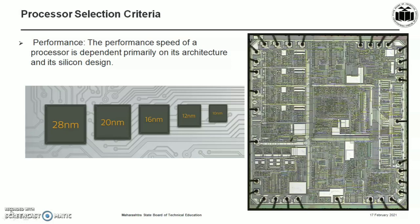CoreMark is one of the best ways to compare the performance of various processors. Size of cache, processor architecture, and instruction set have to be taken into account when comparing performance.